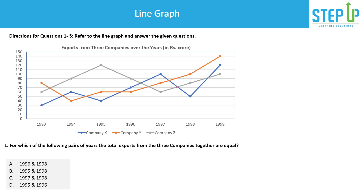The first question asks: for which of the following pairs of years are the total exports from all three companies together equal? The options are 1995 & 96, 1998 & 97, etc. We always keep an eye on the options — so we don't need to look at 1993 or 1994. We'll only check the years mentioned in the options: 1995, 1996, 1997, and 1998.